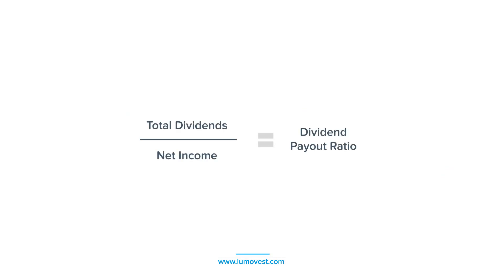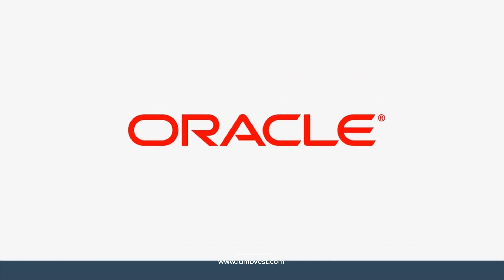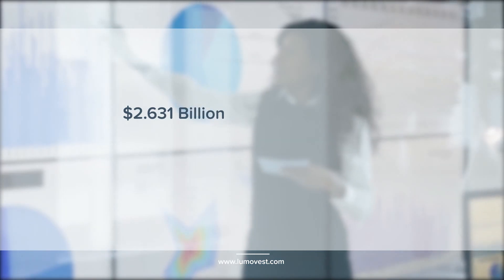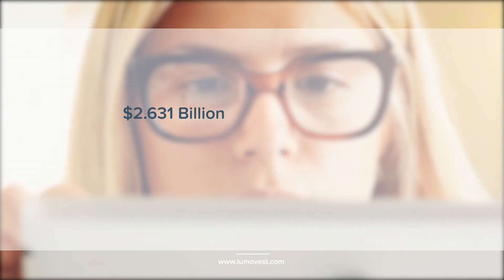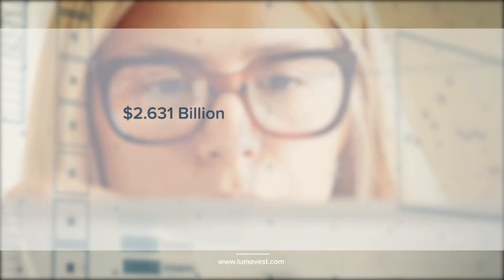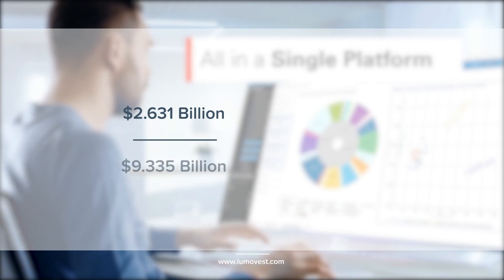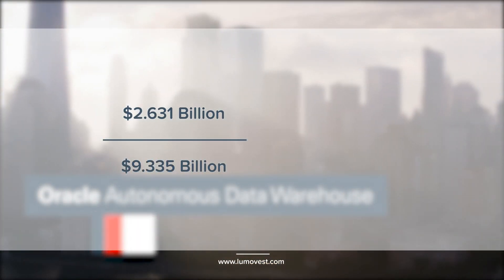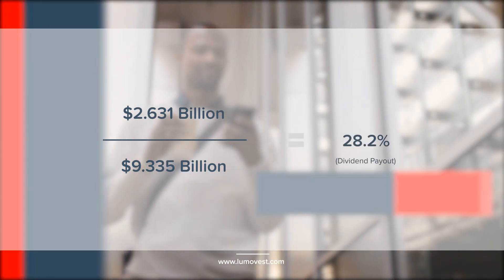Let's start with the first formula: total dividends divided by net income. The total dividends can be found on the cash flow statement, and the net income is found on the income statement. Take Oracle, for example. We can see from its cash flow statement that its total dividends paid to shareholders came out to be about $2,631,000,000 in 2017. Its 2017 net income from the income statement is $9,335,000,000. So that's a dividend payout ratio of 28.2%.